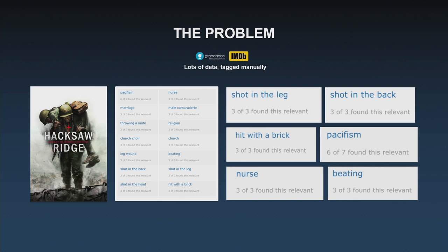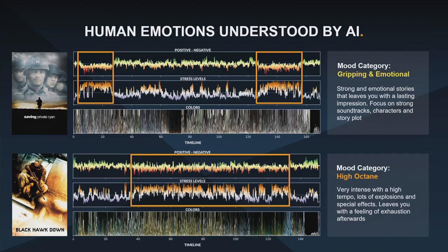AI has come so far that it understands storytelling. What I mean is that AI can actually predict the emotional structure of a movie. I hope you've seen the movie Saving Private Ryan — with spoiler alerts. You had 22 years to see it, so I'm not going to feel bad for spoiling it.